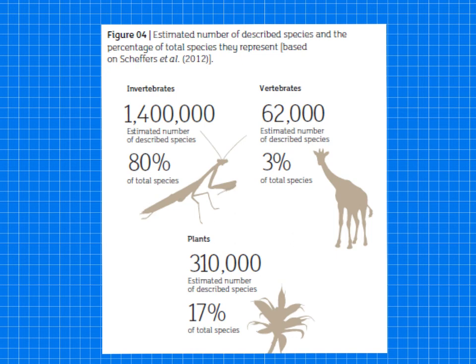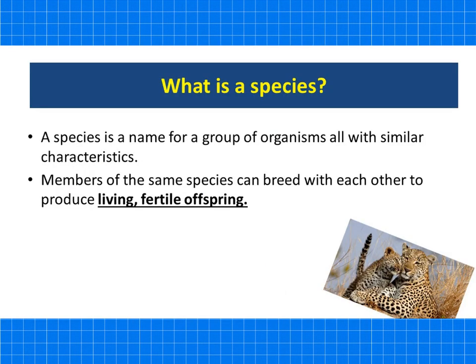Due to the vast number of species, if you're studying the species of the planet you need to classify them into certain groups. These groups need to be understood by scientists around the world in different countries with different languages. Before scientists can estimate the number of species, we have to agree on a definition of what a species is. A species is a group of organisms all with similar characteristics, and members of the same species can breed with each other to produce living, fertile offspring.